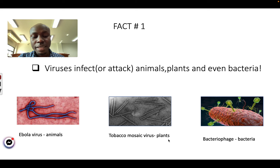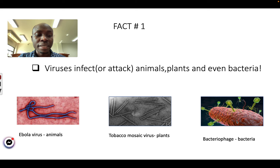In this picture, you can see the green objects are the viruses, and the brown or red object is the bacterium cell that they are attacking.